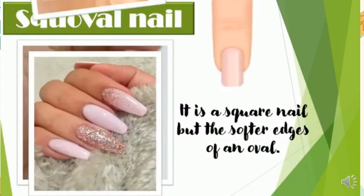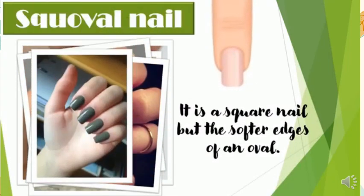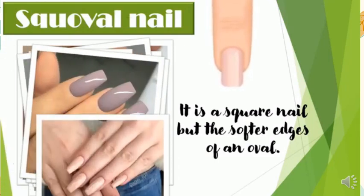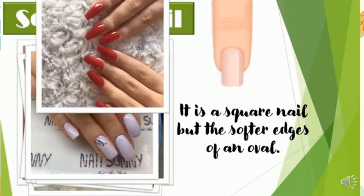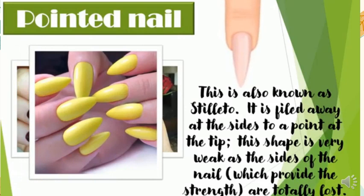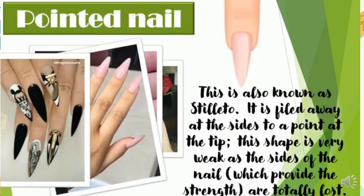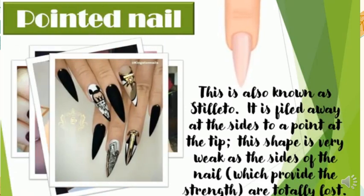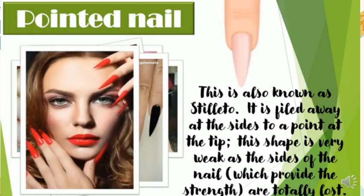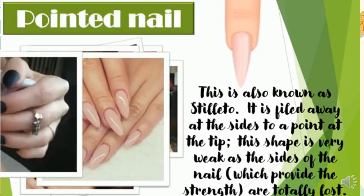Squoval nail — it is a square nail but with the softer edges of an oval. Pointed nail — also known as a stiletto. It is filed away at the sides to a point at the tip. This shape is very weak as the sides of the nail, which provide the strength, are totally lost.